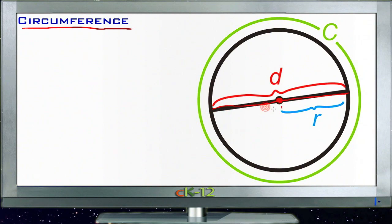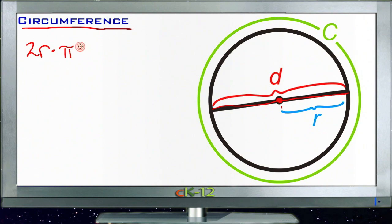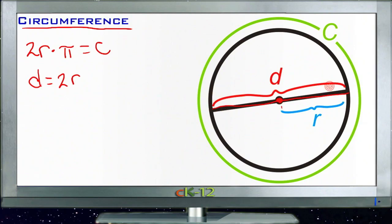There are two versions of what is essentially the same formula depending on which of those bits of information you know. If you happen to know the radius of the circle, then you take the radius and multiply it by 2 and then multiply that value by pi, and that will give you the circumference. If you happen to know the diameter — since the diameter is really the same as 2 times the radius — we can substitute that in and get d times pi equals c.